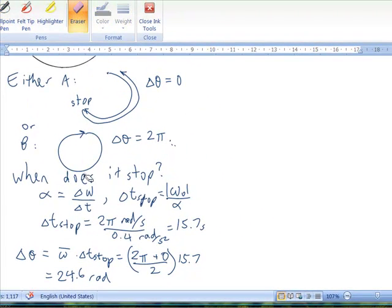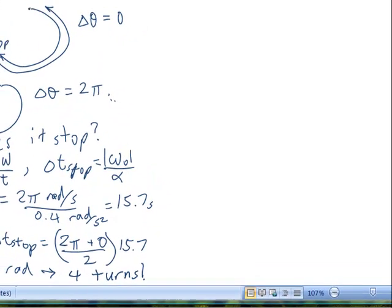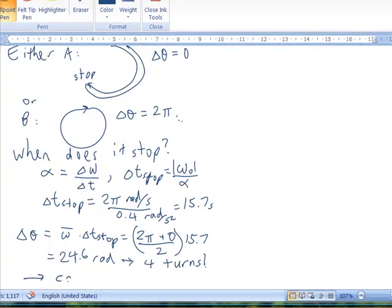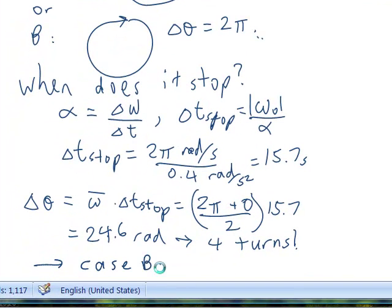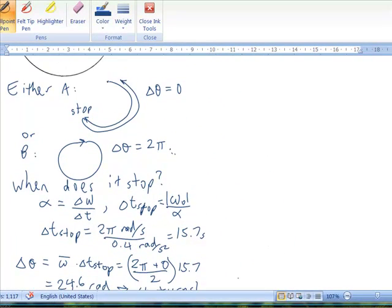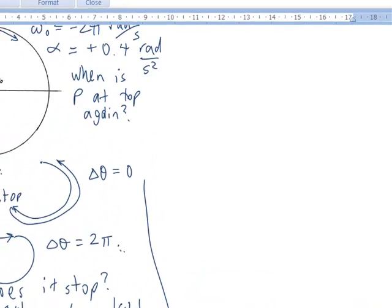And so that is actually about four turns. So, it must be case B. It must go all the way around before it stops. So, we're going to use delta theta is equal to two pi in order to solve this problem. That was just setting this up to try to picture in my head what's going to happen and how we're going to solve this.